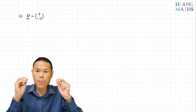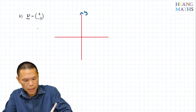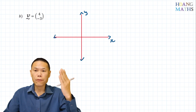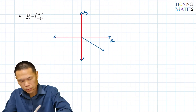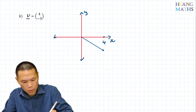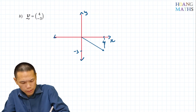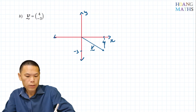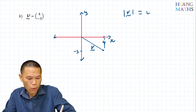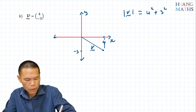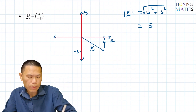To work out the vector V, it is exactly the same manner. So we draw a diagram — the vector V is on the fourth quadrant because it is (4, -3). This is 4 and this is negative 3. To work out the magnitude using Pythagoras' theorem: |V| equals the square root of 4 squared plus 3 squared. 4 squared plus 3 squared is 25, and the square root gives me 5 units.